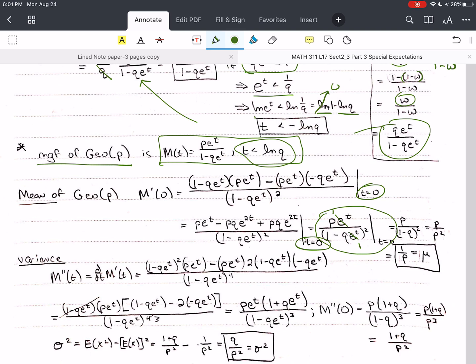And we're left with p over 1 minus q squared. Well, 1 minus q is p. So I have p over p squared. One of those cancels out. The mean of the geometric is 1 over p. That's mu.